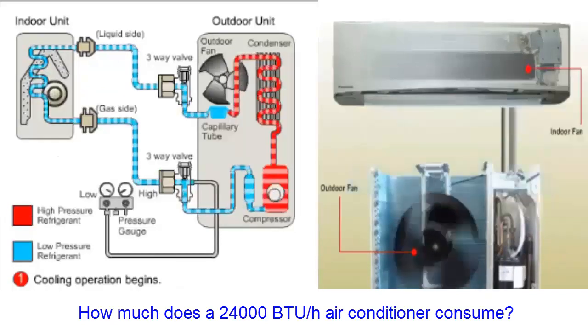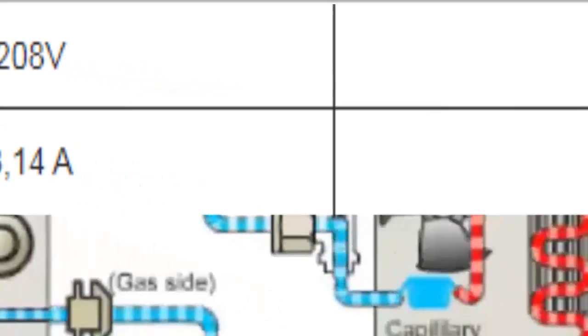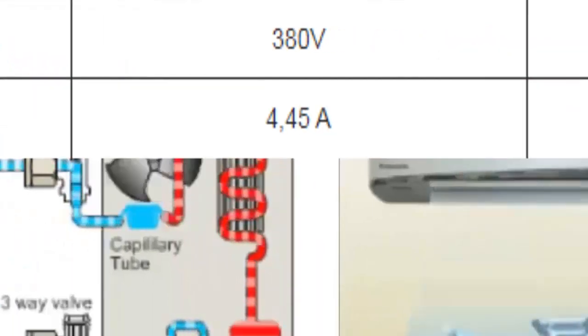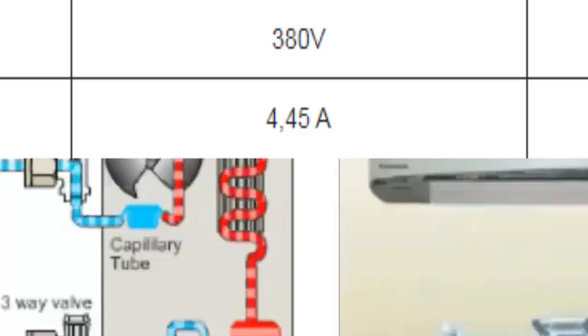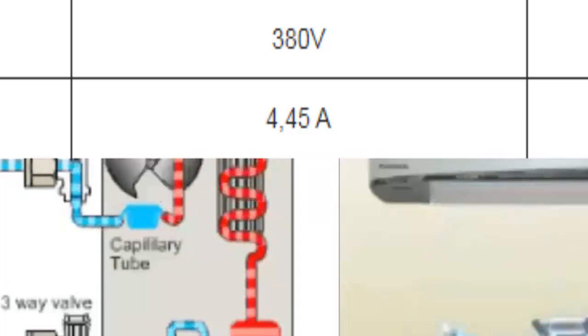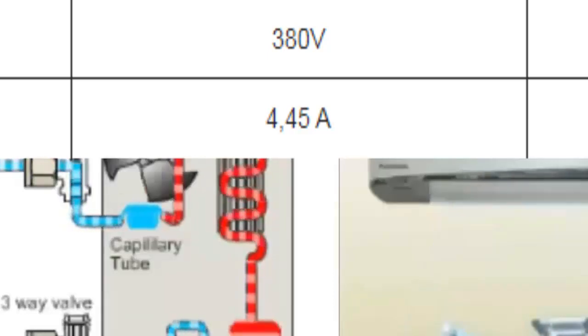For a three phase power supply voltage of 380 volts, the average current consumption of the equipment at 100% capacity is 4.45 amperes. For a three phase power supply voltage of 400 volts, the average current consumption at 100% capacity is 4.24 amperes.